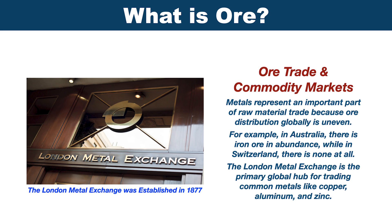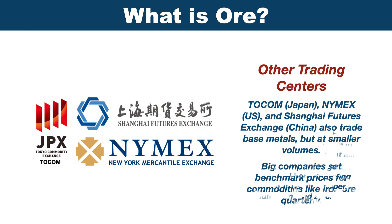The London Metal Exchange is the primary global hub for trading common metals like copper, aluminum, and zinc. TOCOM in Japan, the New York Mercantile Exchange in the United States, and the Shanghai Futures Exchange in China also trade base metals, but at smaller volumes.